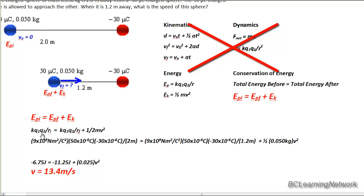So we see our formula, kQ1 q2 over r initial, is 9 times 10 to the 9 times 50 times 10 to the negative 6 times negative 30 times 10 to the negative 6, all divided by 2, equals kQ1 q2 over r final.